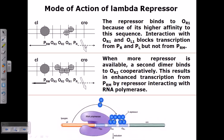This is about the lysogenic cycle. Let's talk about the mode of action for the lambda lysogenic cycle. In the case of the lambda repressor during the lysogenic cycle, the repressor binds to OR1 because of its higher affinity to this sequence. Usually the repressor has higher affinity to OR1, which is a very important foundation.